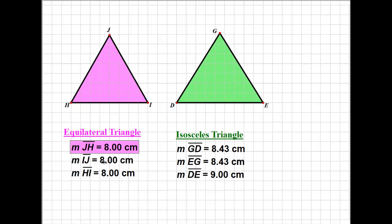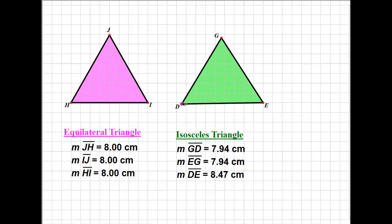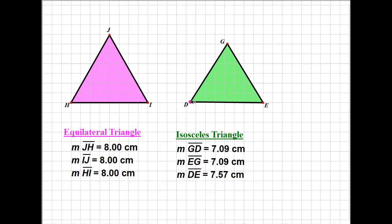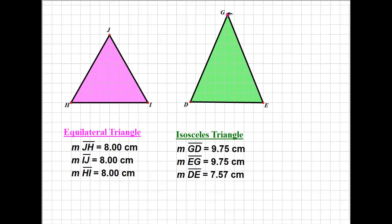We can also have a triangle with all equal sides, and such a triangle is called an equilateral triangle. We can make an isosceles triangle into an equilateral triangle by adjusting the side lengths so all three sides are equal in length.